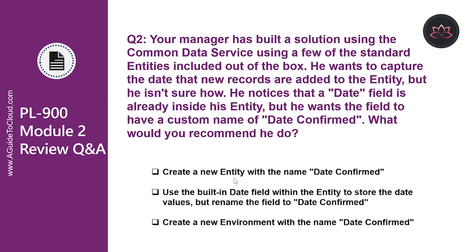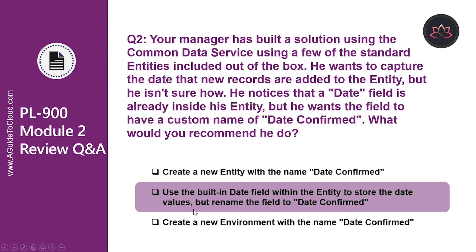Can he create a new entity with the name called Date Confirmed? No, that doesn't work. Or can he create a new environment with the name Date Confirmed? Absolutely not. So the correct answer is to use the built-in date field within the entity to store the date values, but rename the field to Date Confirmed. So whenever possible, if an entity has an existing field of the type you need, reuse that field before creating a new one.